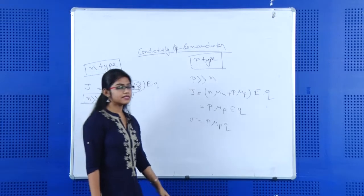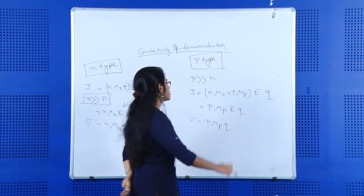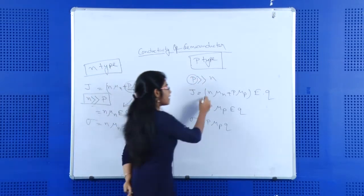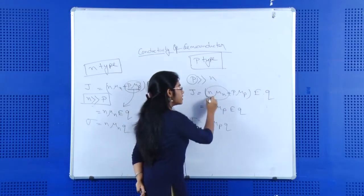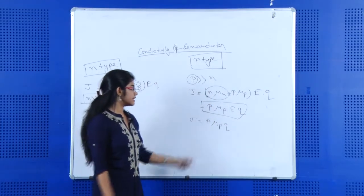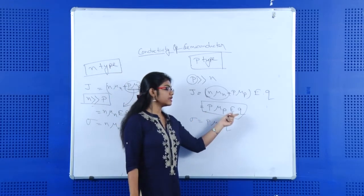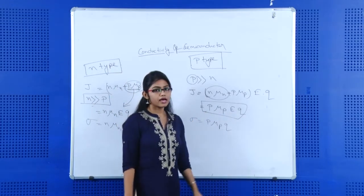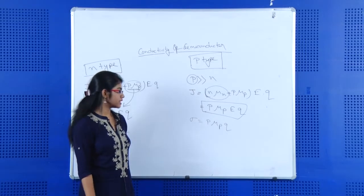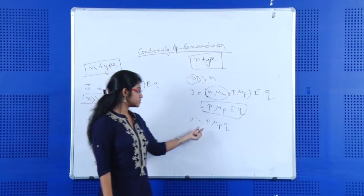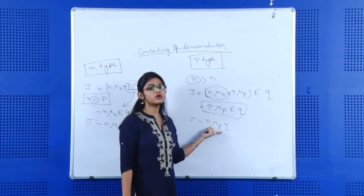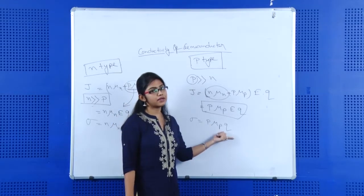For p-type semiconductor material, the concentration of hole is much greater than n. So we avoid the electron concentration term, and the minimized equation for current density is p multiplied by mu_p multiplied by q. The conductivity of p-type semiconductor material is p — that is, concentration of hole into mobility of hole multiplied by charge.